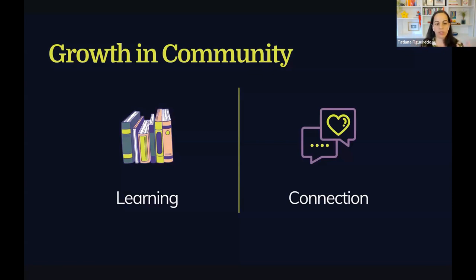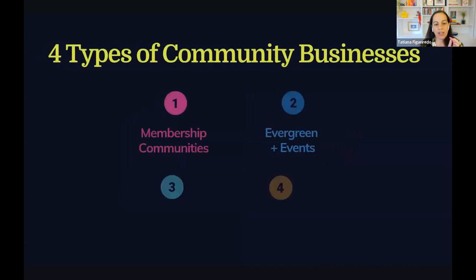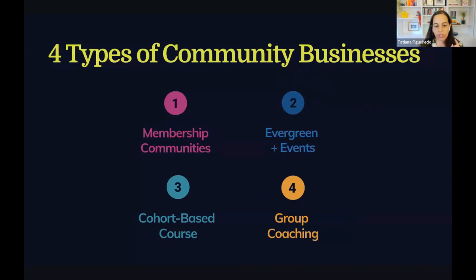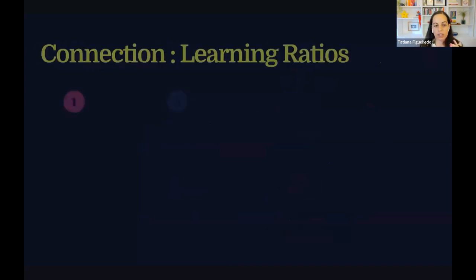These should be flipped — it should be connection to learning, C to L. Depending on the type of community business that you run, the general connection to learning ratio matters a lot. So if you're doing a course versus a membership community, they have flipped ratios. Here's what that looks like.